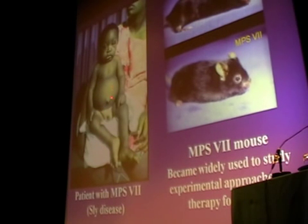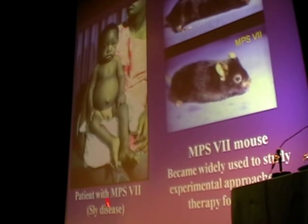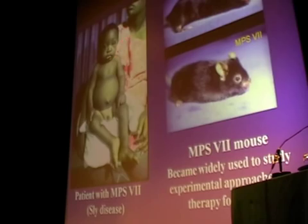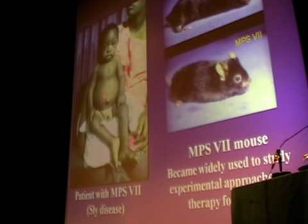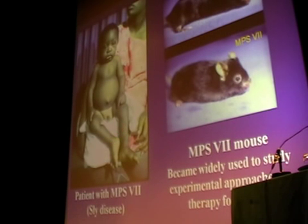This is the first patient described with beta-glucuronidase deficiency, MPS7, also known as Sly disease. It has a typical phenotype of the storage disease with a broad, flattened face, a large liver and spleen, and joint and bone problems.